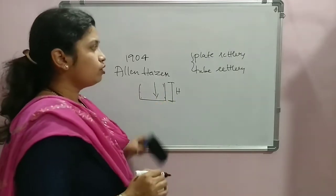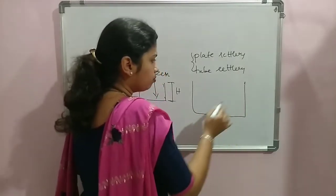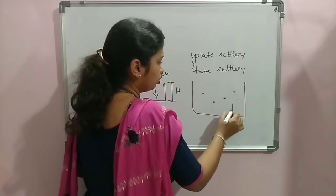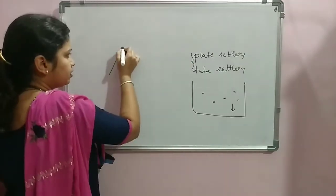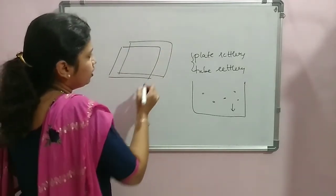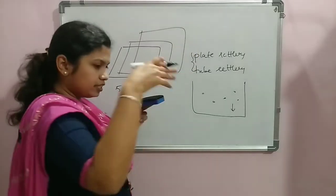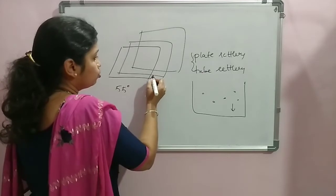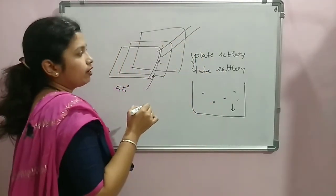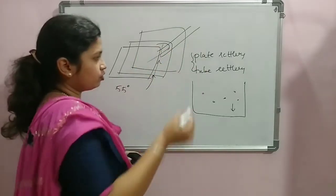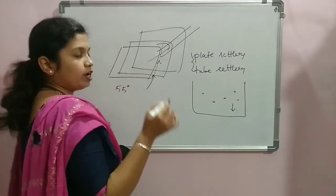By using plate settlers and tube settlers, we change the process. In an empty tank, particles settle slowly under gravity. By replacing the empty space with plates or tubes, we improve settling. For plate settlers, a series of slanted plates at around 55 degrees are placed inside the tank. Water rises through bottom orifices and is collected by common collection channels connected to the plates, then taken out for the next process.